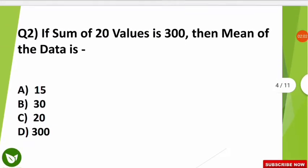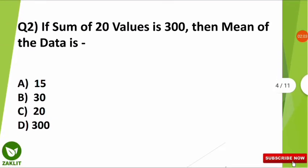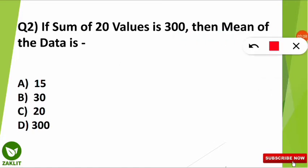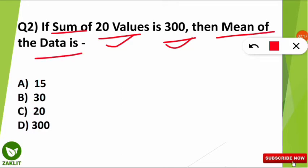The second question: if the sum of 20 values is 300, what is the mean of the data? The options are 15, 30, 20, or 300. Take a moment to think about it.